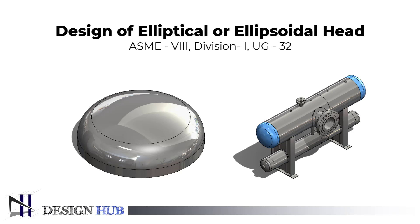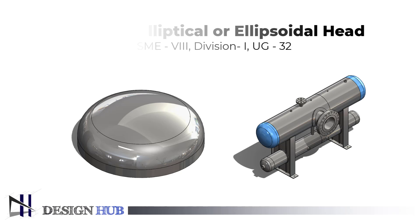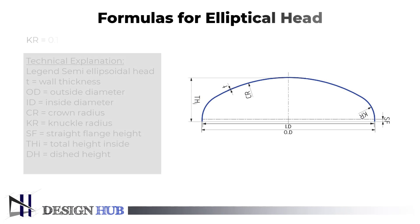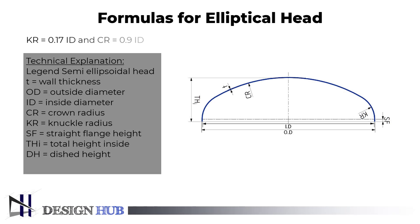Forming on metal sheets is performed by applying pressure on the concave side of the head. While designing the elliptical head, one should know the formulas. The formulas are displayed on the screen, and there is also a technical explanation for each of them.